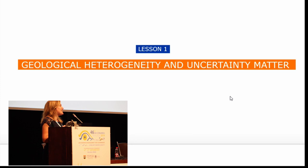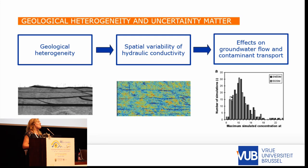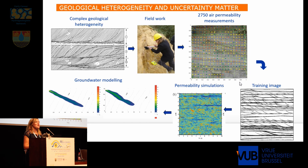Lesson one. This is a very obvious and straightforward one: geological heterogeneity and the uncertainty about this matter. There have been plenty of researchers who have shown that geological heterogeneity results in often very complex patterns of spatial variability of hydraulic conductivity, and this often has a significant effect on flow and transport in groundwater. It matters in all kinds of geologic media, on many different scales, and for very different applications.